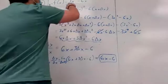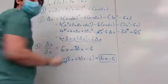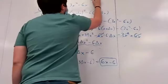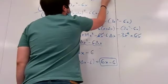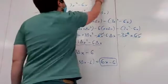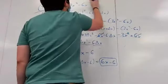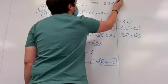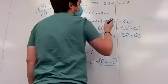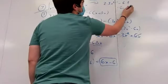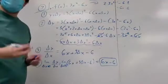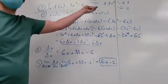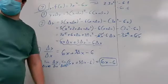As a check using power rule: the derivative of 3x²-6x = 2·3·x^(2-1) - 6·1 = 6x-6. This matches. But on the test you must show the four-step process — don't just use power rule for the work.